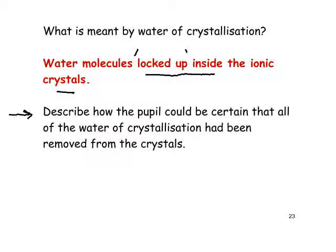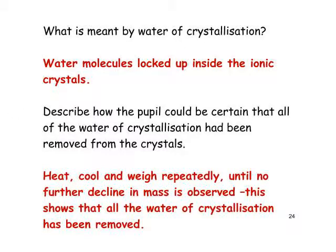How could the pupil be certain that all the water of crystallisation has been removed from the crystals? You heat, cool, and weigh — and keep doing that repeatedly until there is no further decline in mass. This shows that all the water of crystallisation has been removed. We heat and weigh over and over until we reach a constant mass.